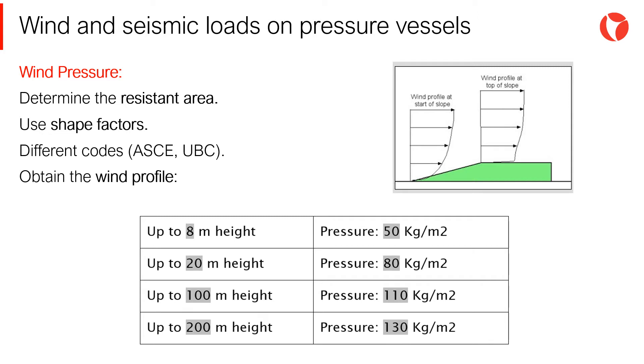To analyze the wind load that will be acting on a pressure vessel, the cross section of the equipment must be known, in other words, the resistant area. Depending on the local legislation, different methods will be followed to determine the wind profile as indicated in the figure.